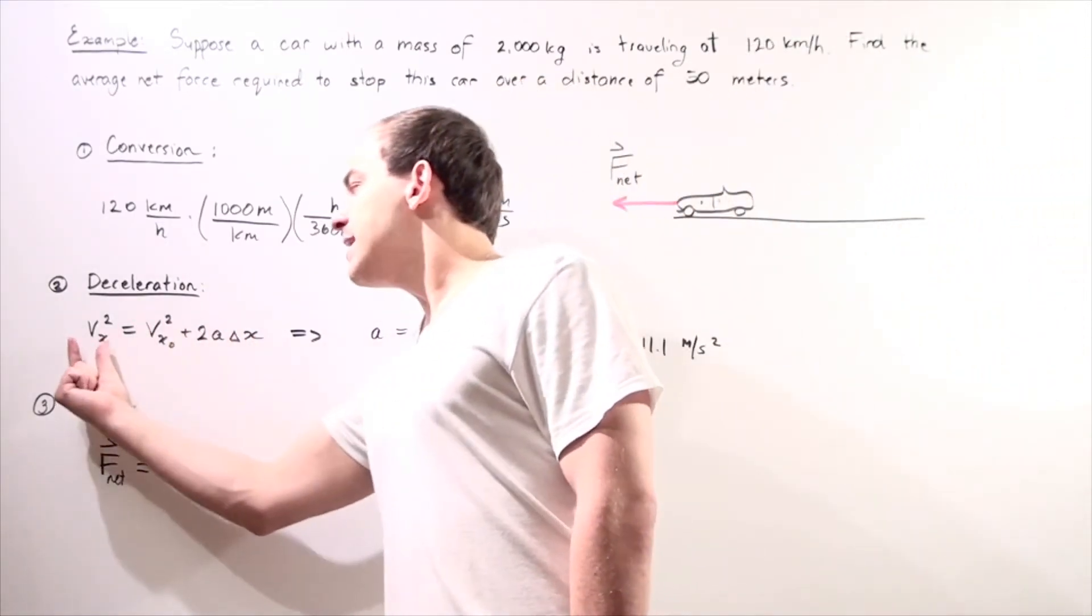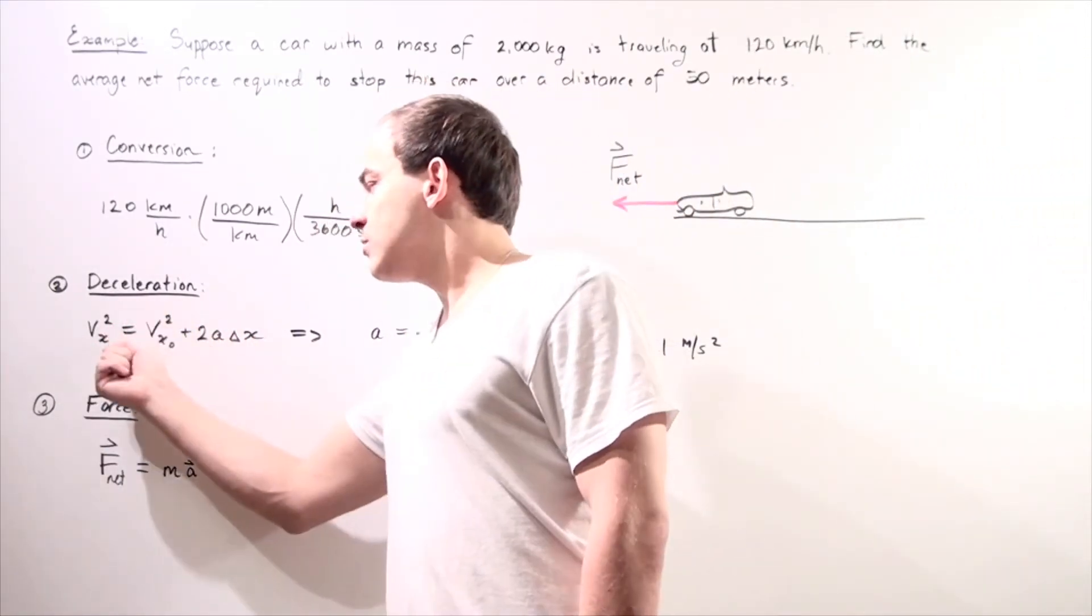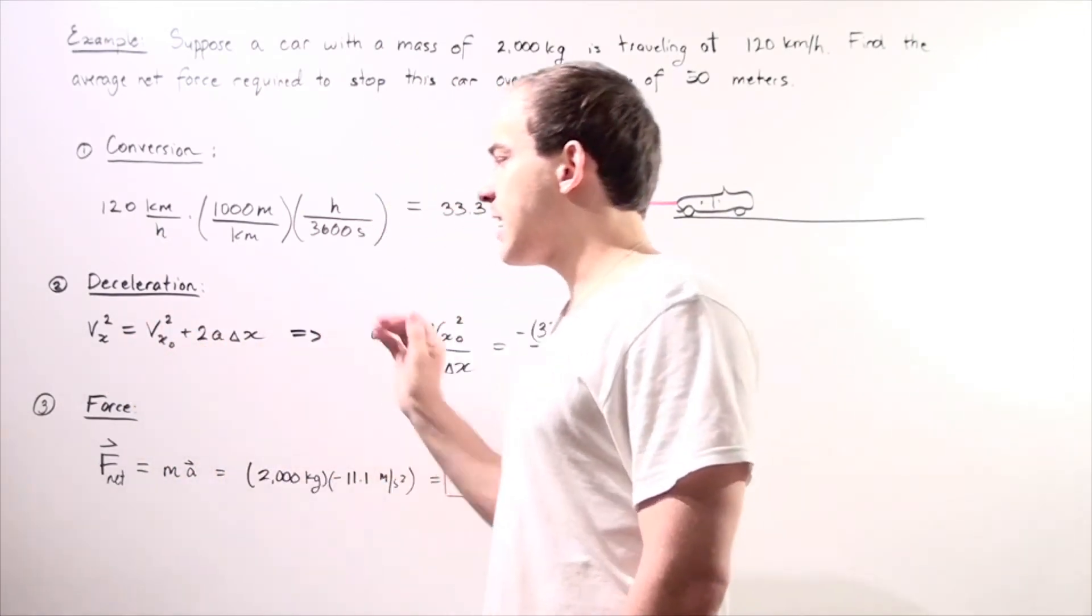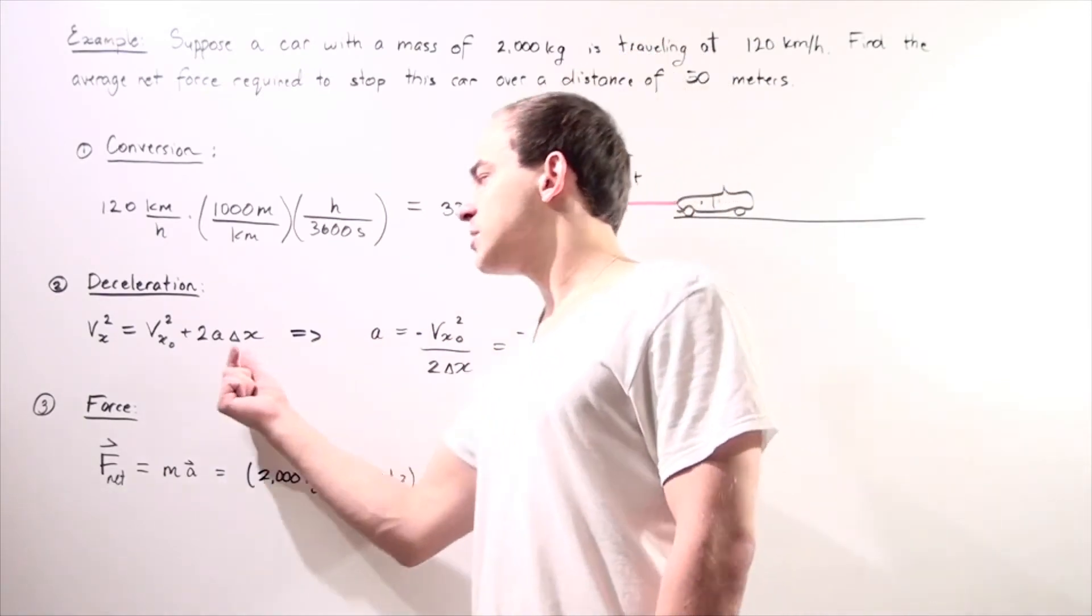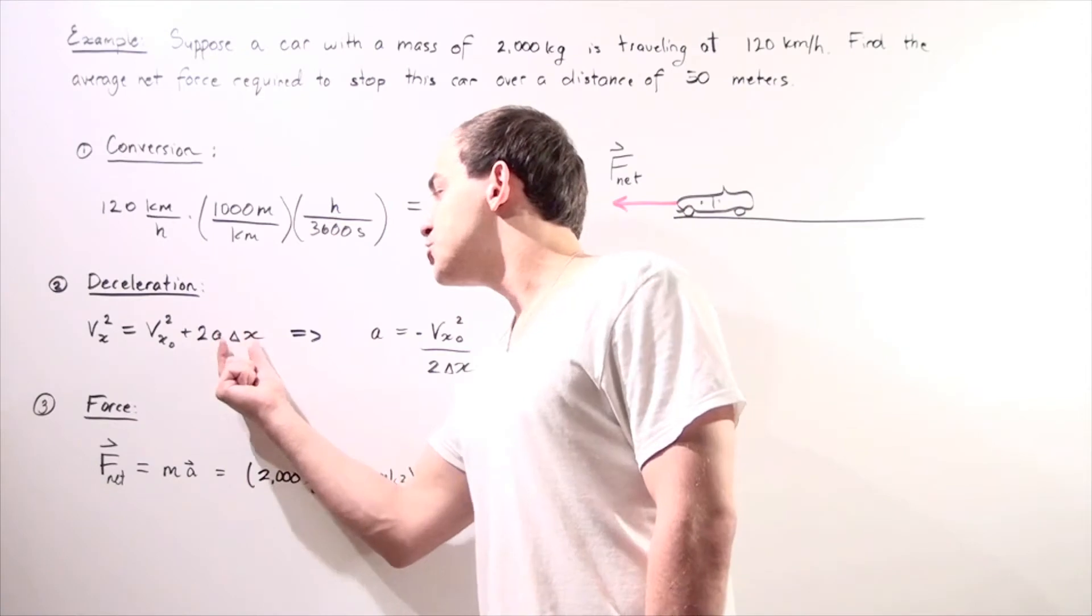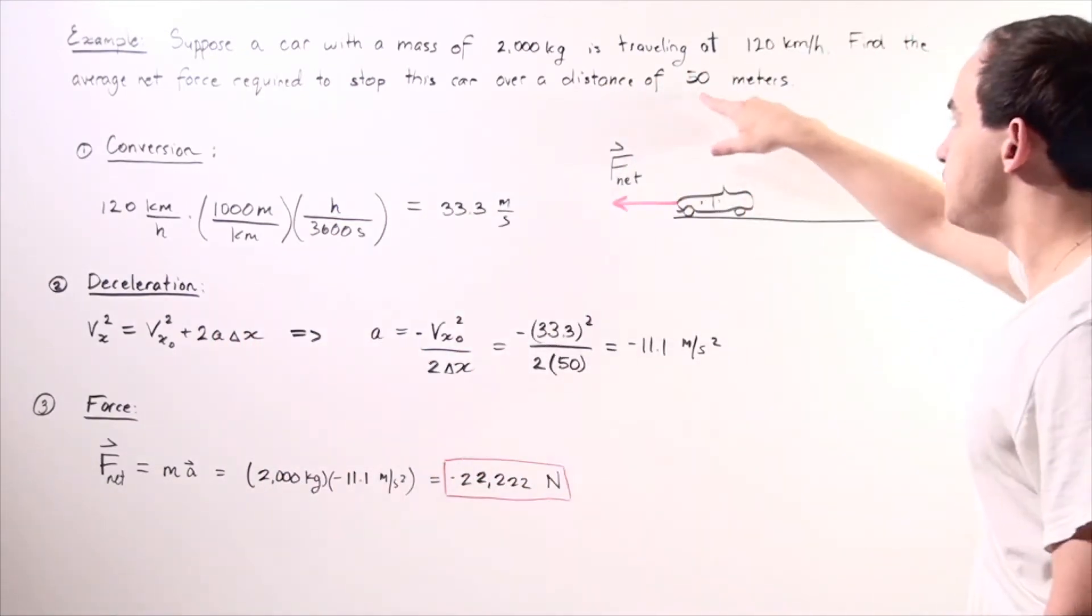multiplied by our displacement or change in position. So change in position is 50 meters. Our acceleration is what we want to find, so we solve for a.